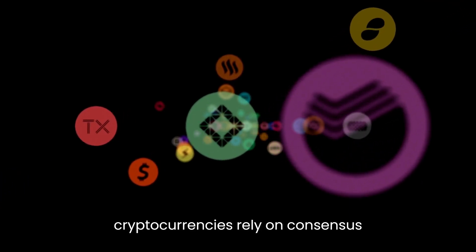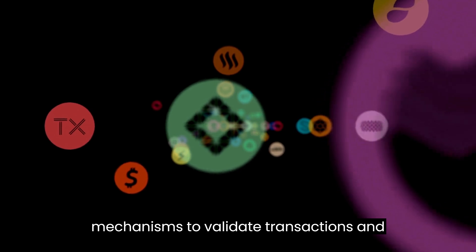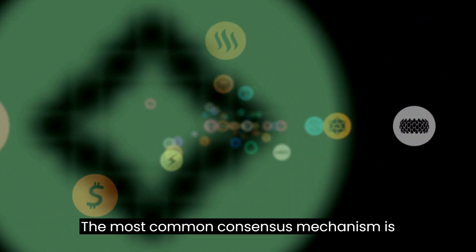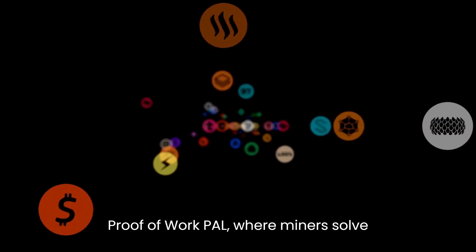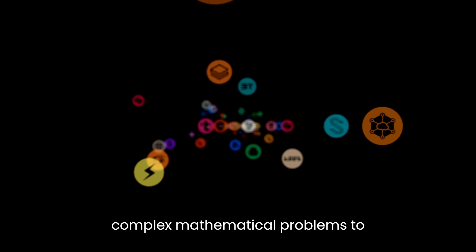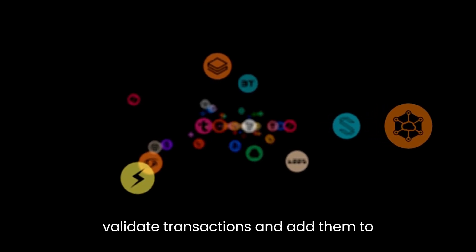Thirdly, cryptocurrencies rely on consensus mechanisms to validate transactions and maintain the integrity of the blockchain. The most common consensus mechanism is proof-of-work (POW), where miners solve complex mathematical problems to validate transactions and add them to the blockchain.